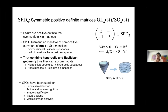For SPD(n), the maximal Euclidean subspaces have dimension n and the maximal isometrically embedded hyperbolic subspaces have dimension n−1. SPD(2) is homeomorphic to H² × ℝ, but for SPD(3) and higher the space is no longer a simple product of hyperbolic and Euclidean pieces.